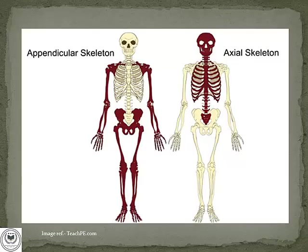As you can see in the diagram, there are two types of skeleton. The left-hand side shows the appendicular skeleton and the right-hand side shows the axial skeleton.